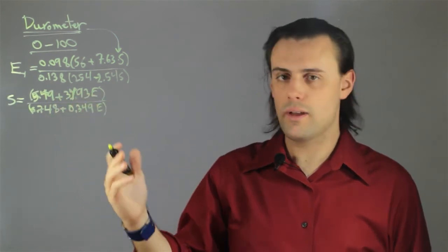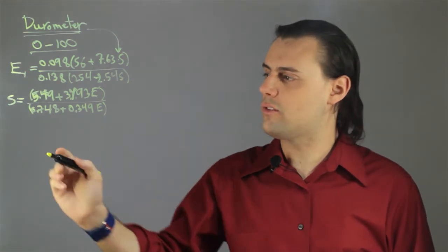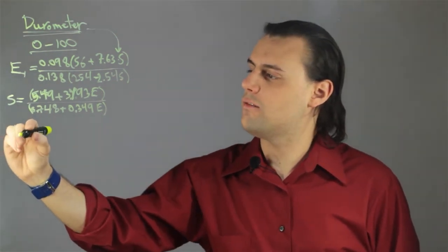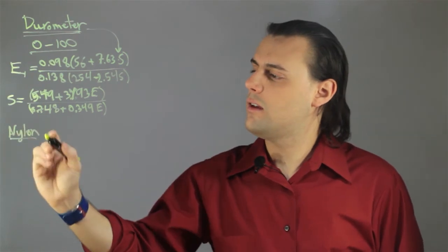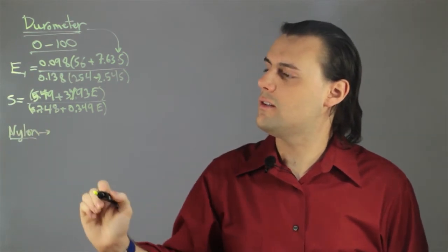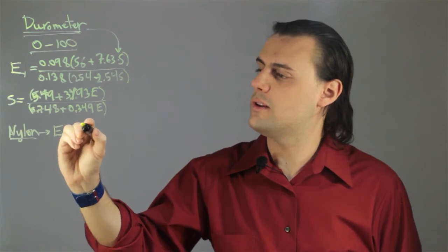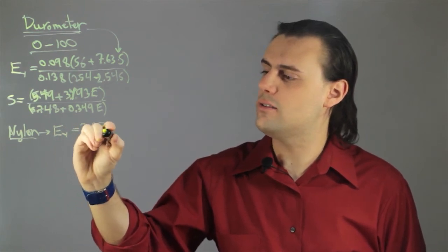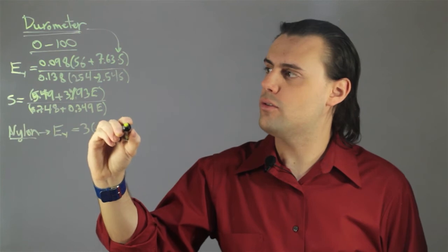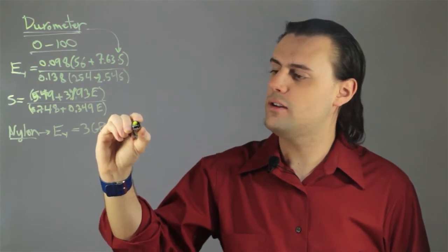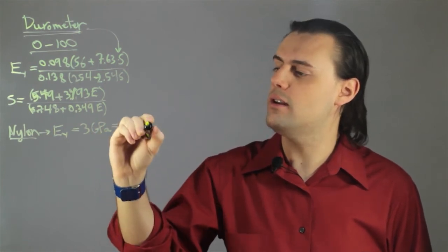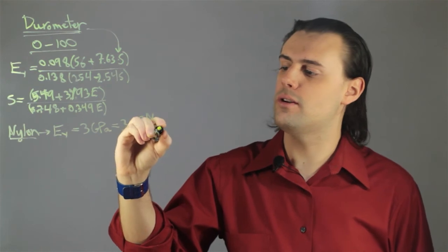Now, we can consider two materials. For example, we have nylon, and nylon has a Young's modulus of approximately 3 gigapascals, which is equal to 3 times 10 to the ninth, or 3 billion newtons per meter squared.